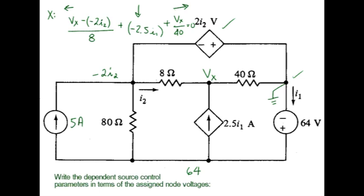I2 is minus 2i2, that's the voltage on the left side of the 8 ohm resistor, minus vx. Minus 2i2 is on the left side, vx is on the right side, and divide that by 8.